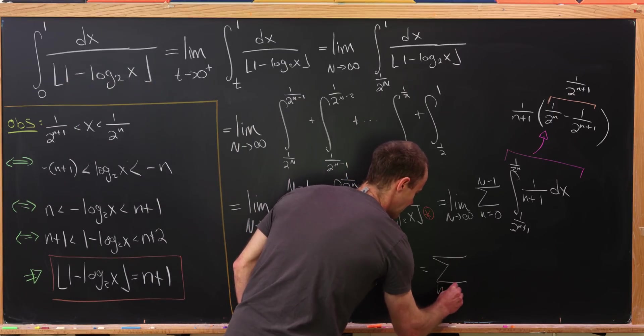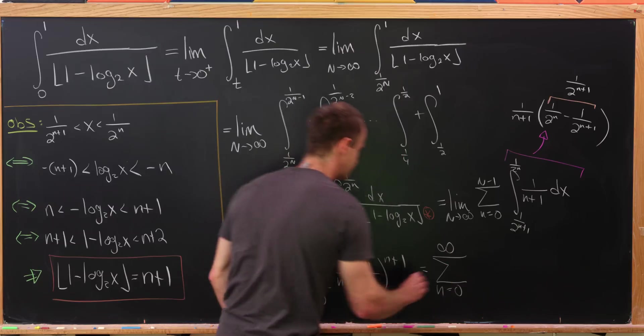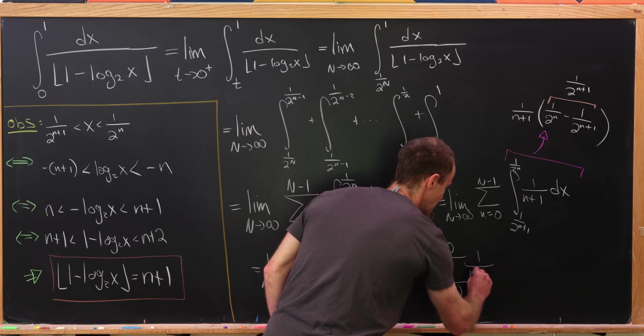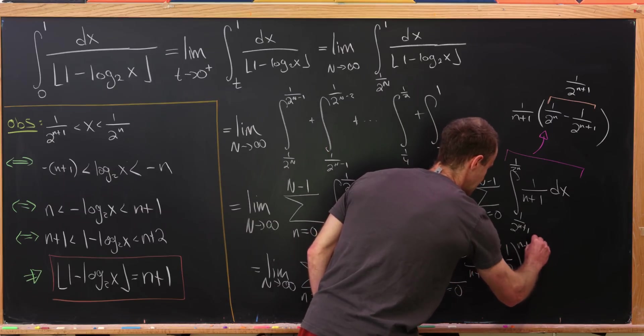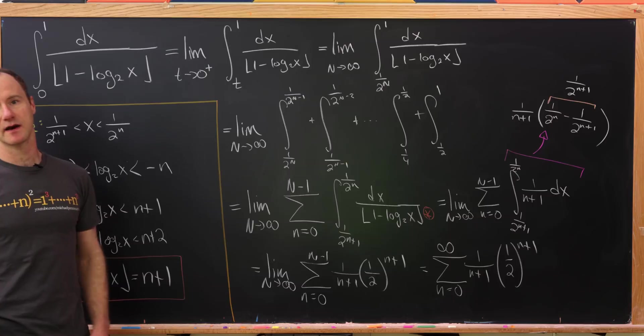So we have this is the sum as little n goes from 0 to infinity of, well, it's going to be the same thing, 1 over n plus 1 and then 1 half to the n plus 1. Okay, so let's bring that up.